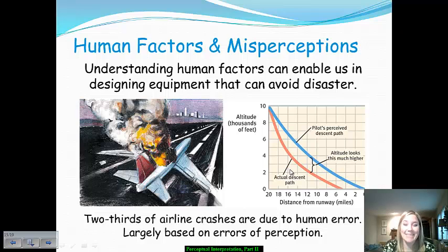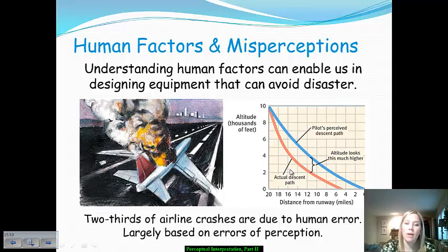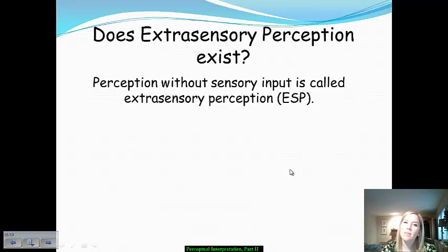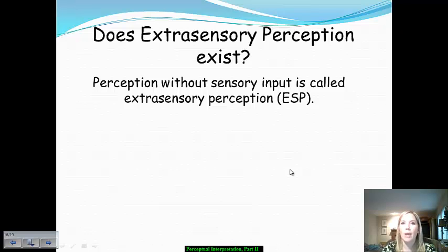Understanding these error-prone behaviors and how we are not always perfect can help advance safety through human factors psychologists. Now let's redirect and talk about extrasensory perception — ESP. ESP is supposed to be perception that we can establish without any sensory input — for example, being able to read a person's mind or move an object across the room with your mind.